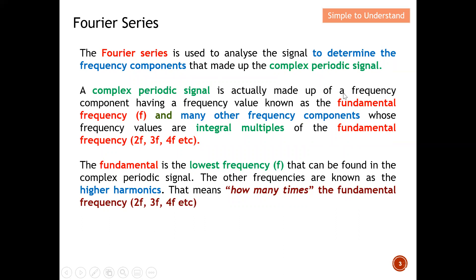A complex periodic signal is made up of a frequency component having a frequency value known as the fundamental frequency. The complex periodic signal has this fundamental frequency and also many other frequency components whose frequency values are integer multiples of the fundamental frequency. For example, if the fundamental frequency is f, the other components are 2f, 3f, 4f, 5f, 6f, 7f, etc. The fundamental is the lowest frequency found in the complex periodic signal. The other frequencies are known as higher harmonics — spaced at two times, three times, four times the fundamental.